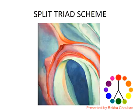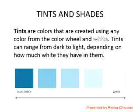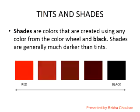Tints are colors created using any color from the color wheel mixed with white. Tints can range from dark to light depending on how much white they have in them. Shades are colors created using any color from the color wheel mixed with black, and shades are generally much darker than tints.